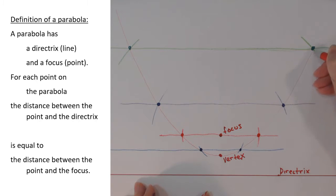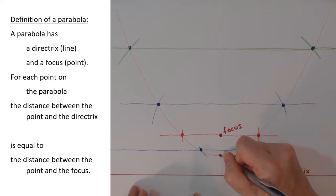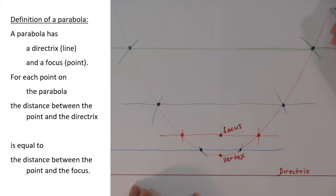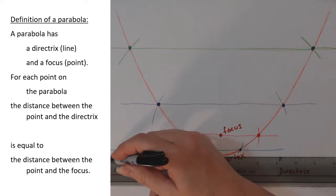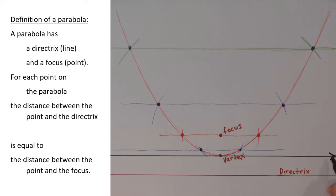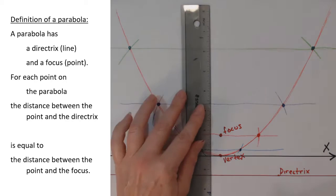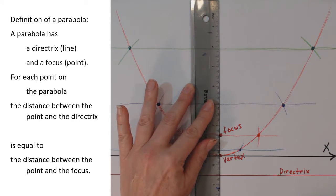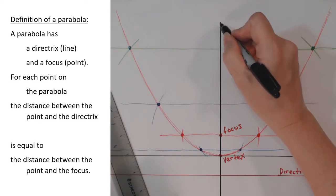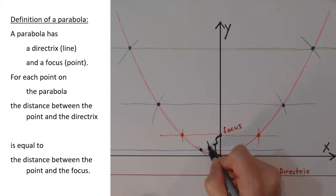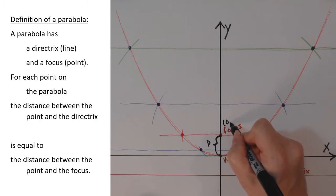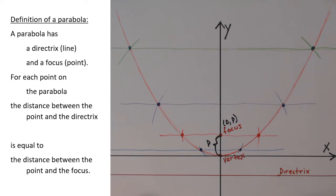If I'm going to write an equation for my parabola, I'm going to need coordinates for all these points, and that means I need a coordinate system. I run an x-axis horizontally through the vertex and a y-axis vertically through the vertex, so we have the vertex at the origin of the coordinate system. I'm going to call the distance between the focus and the vertex p — p stands for parabola. That gives the focus coordinates x equals zero, y equals p. The vertex is exactly in the middle between the focus and the directrix.